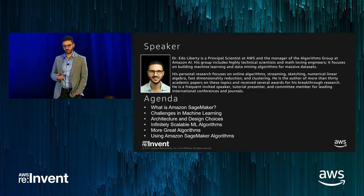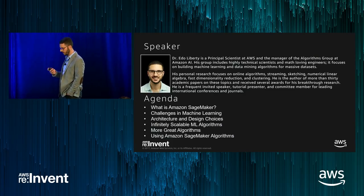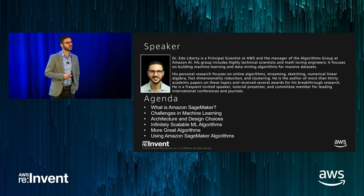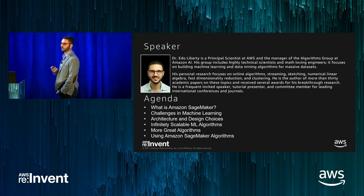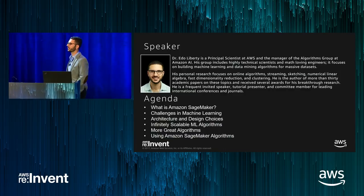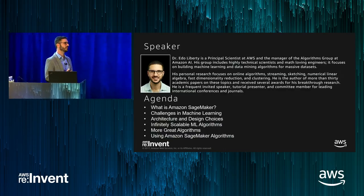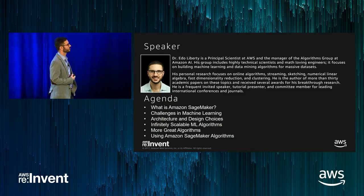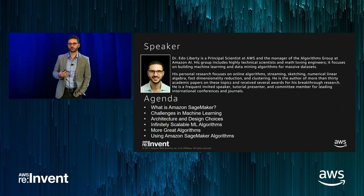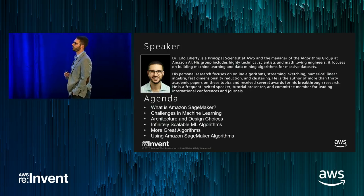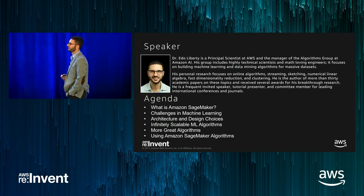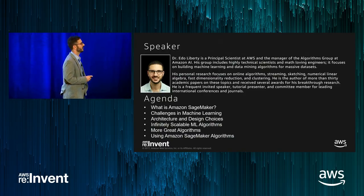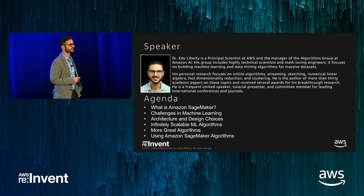We're going to cover what SageMaker is as a whole, then cover what challenges we see in machine learning in the algorithm space, what design we've chosen for our algorithms and what choices we've made for you. Then we'll go over a few infinitely scalable algorithms, and I'll define what infinitely scalable means. Finally, I'll give you examples on how you can use those algorithms in SageMaker today.